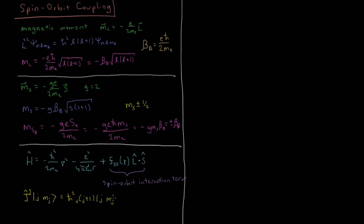The J² operator gives ℏ² J(J+1) times the original state in Dirac ket notation. Then we have the operator J_z along the z-axis, which gives us ℏ·M_J times the state |J, M_J⟩. So these two operators work just like L² and L_z, or S² and S_z. In the spin-orbit coupled hydrogen atom, L and S are not independently well-defined; it is their vector sum J that is the quantity that matters.